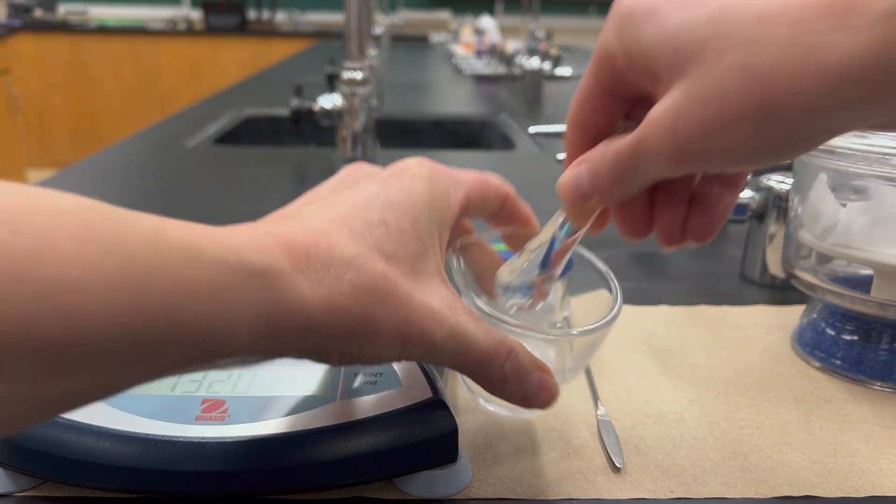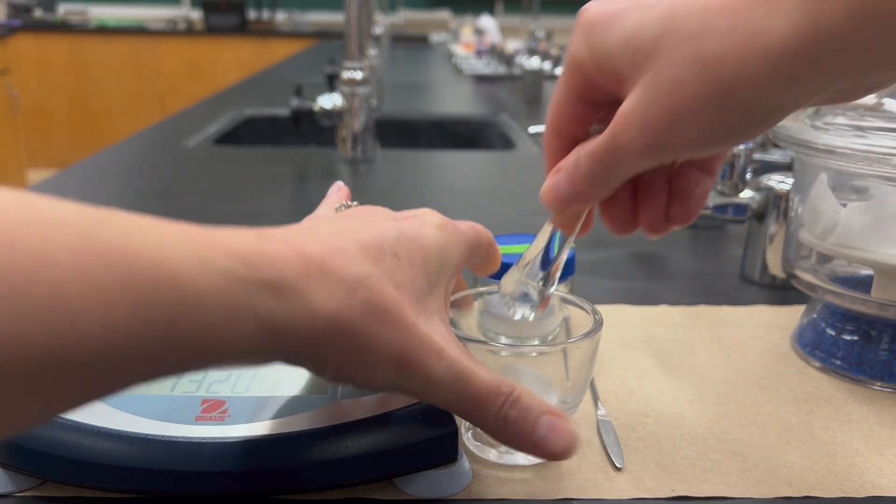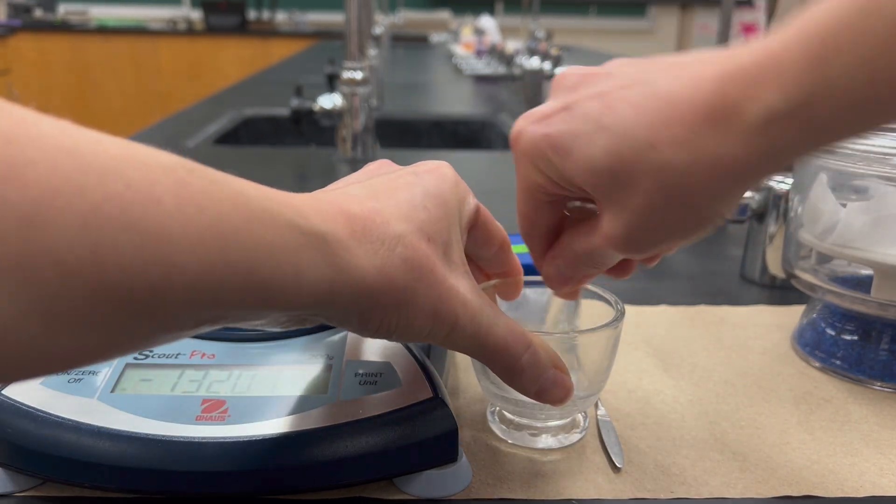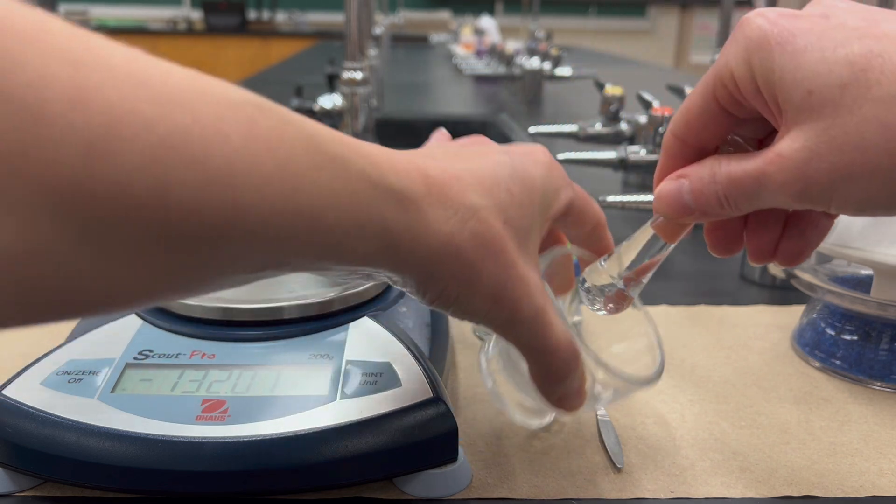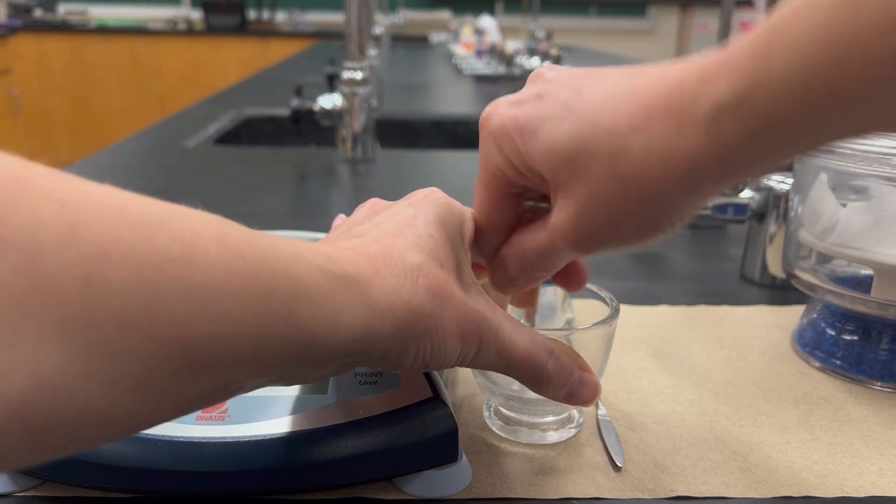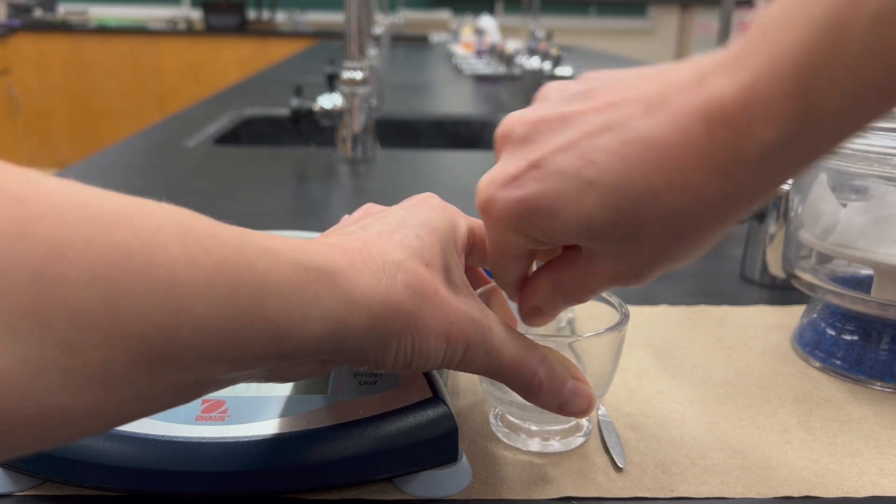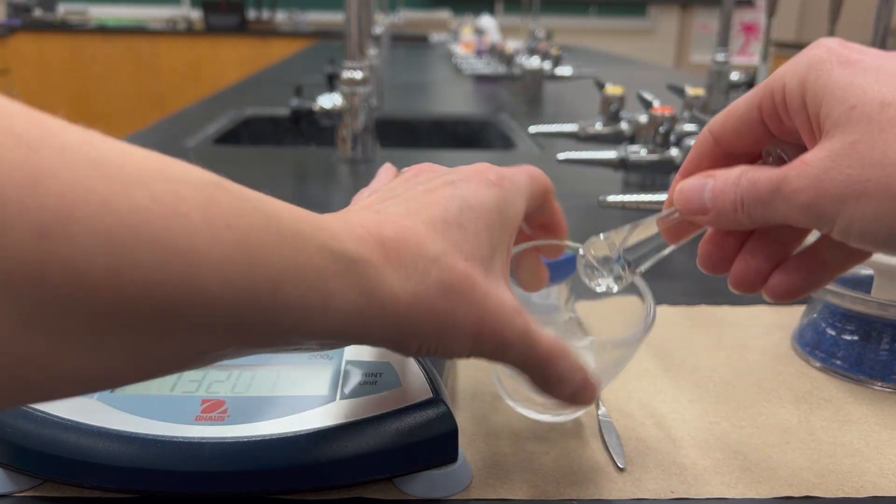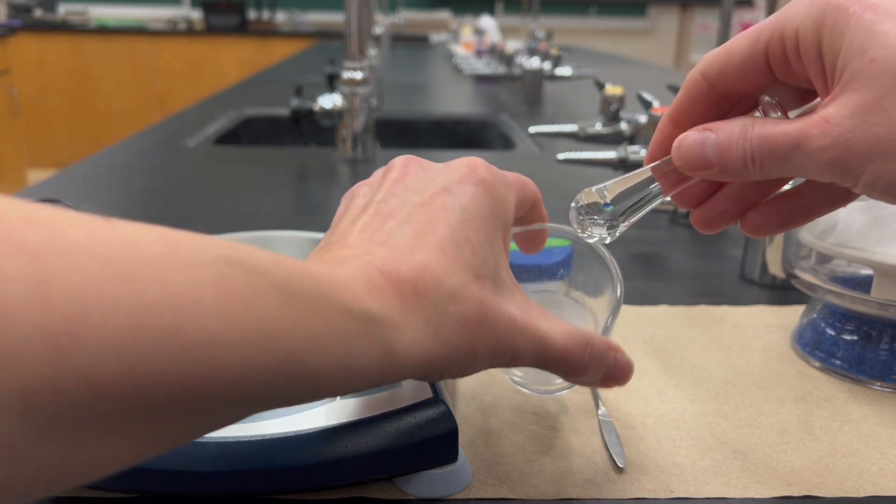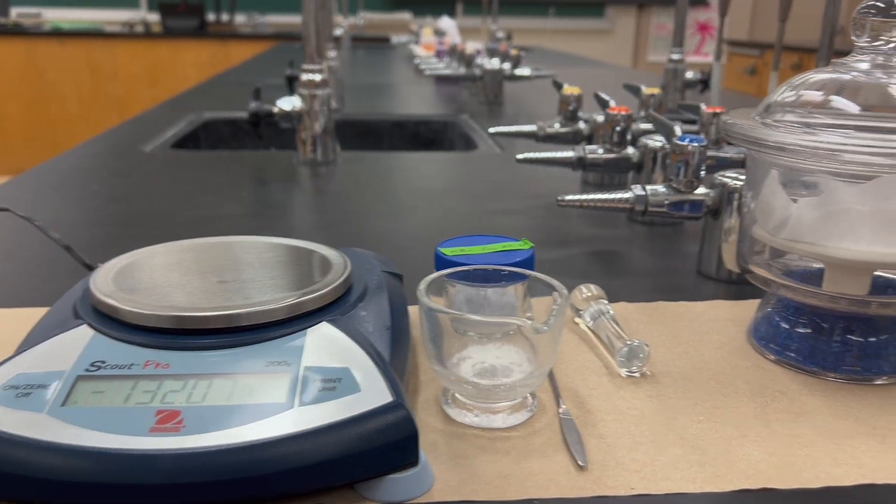Then you're going to use the pestle and grind this stuff together, and you want to create a really fine powder. You do want to make sure that you mix the sample in with the KBR, so periodically you want to tap the mortar and make sure it dislodges; otherwise, you won't actually be grinding the sample together. Make that a nice powder and then you're ready to move on.